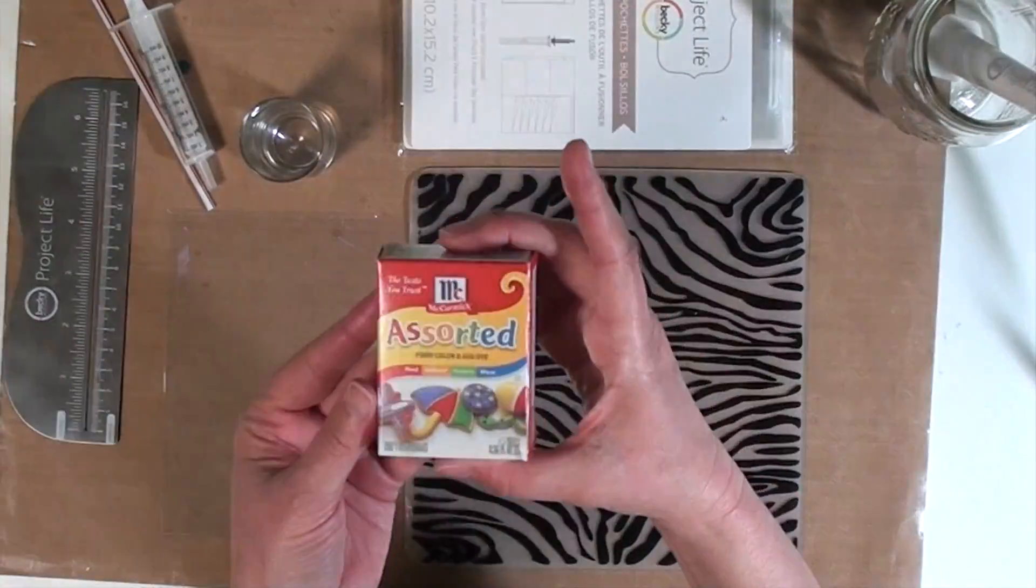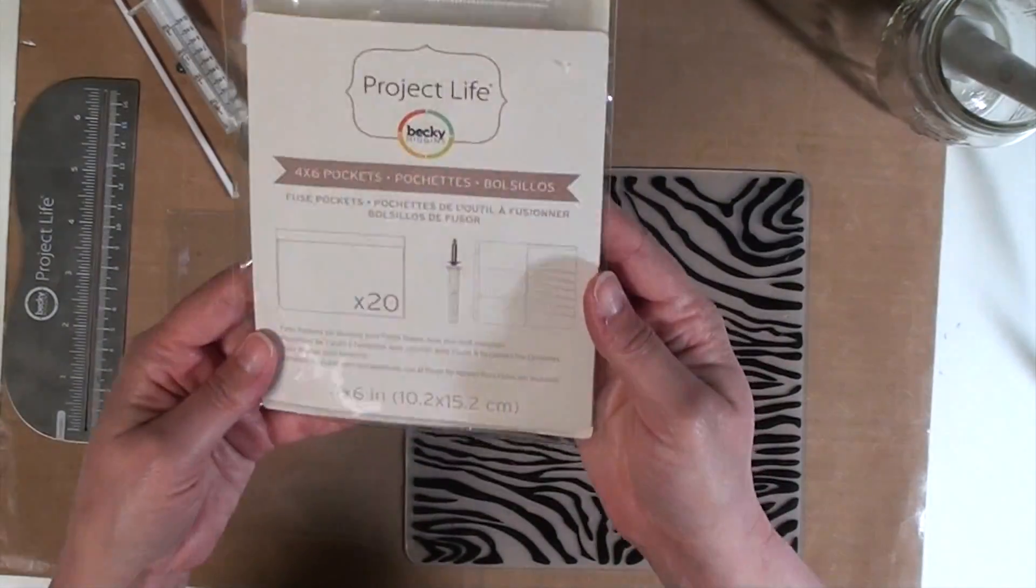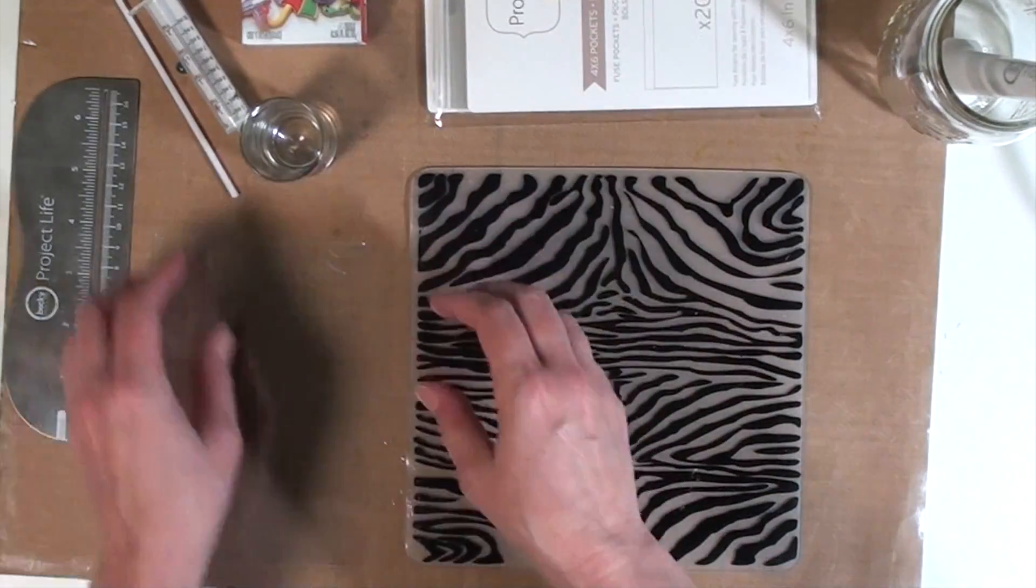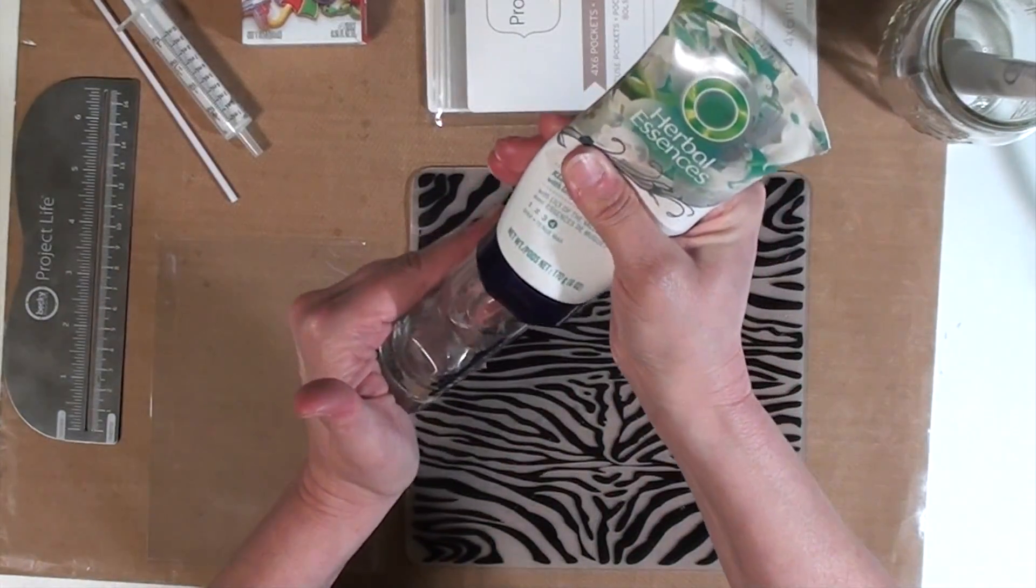So next we'll move on to the phase where I put together the little gel shaker. So I used some hair gel, food coloring, and Project Life sleeves.